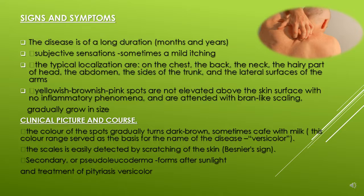Signs and symptoms of the disease: it is of long duration — can be months and years — and sometimes you will feel mild itching. The typical localization includes the chest, the back, the neck, the upper part of the head, the abdomen, the sides of the trunk, and the lateral surface of the arm. You will see yellowish, brownish, and pink spots that are not elevated above the skin surface, with no inflammatory phenomena.